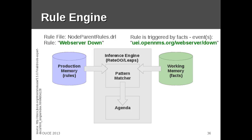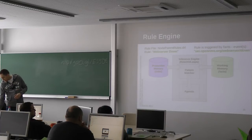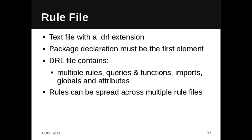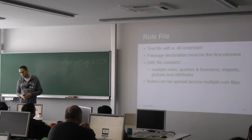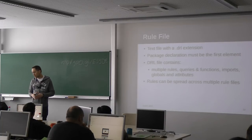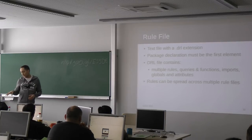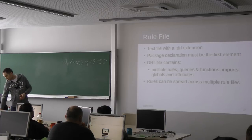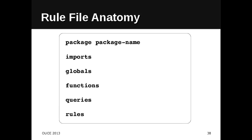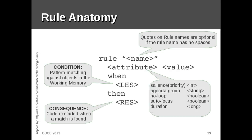A rule is a plain text file with a DRL extension. The package declaration must be the first element. The DRL file can contain multiple rules, queries, functions, imports, globals, and attributes. Rules can spread across multiple rule files. The rule file anatomy includes: package declaration, import declaration, globals, functions, queries, and rules.